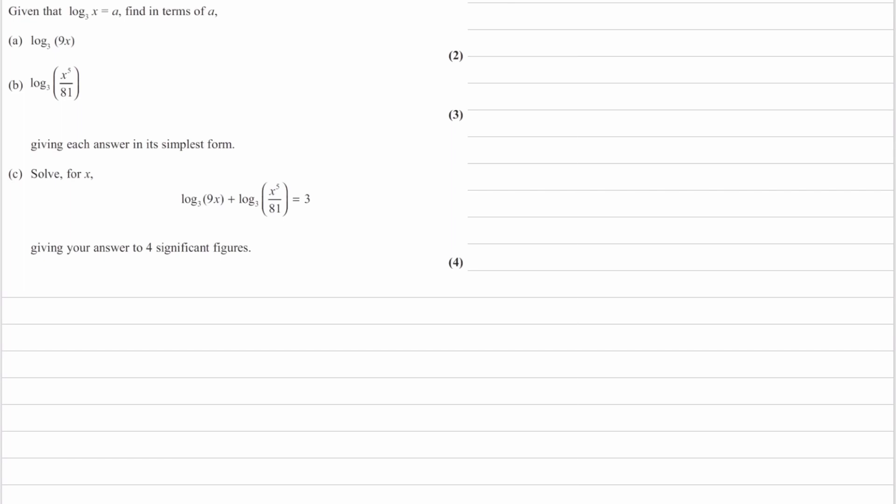So for the first one, we're using the multiplication rule. Remember the multiplication rule is log AB is equal to log A plus log B. So then this becomes, log base 3 of 9x becomes log 9 plus log x.